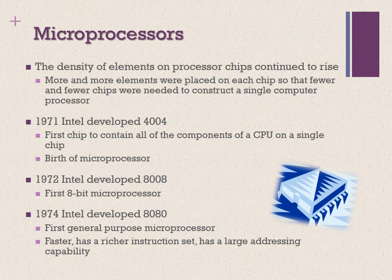Just as the density of elements on memory chips continued to rise, so did the density of elements on processor chips. As time went on, more and more elements were placed on each chip, so fewer and fewer chips were needed to construct a single computer processor. A major breakthrough happened in 1971 when Intel developed the processor 4004 — the first chip to contain all the components of a CPU on a single chip — and so the microprocessor was born, a major milestone in the history of computers.